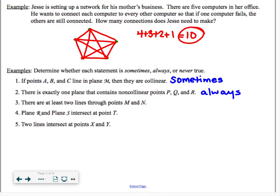Number three, there are at least two lines through any points M and N. This contradicts one of our postulates. This is never true. Remember that between two points there's only one, exactly one line. Plane R and plane S intersect at point T. This one is also never true. Our postulate says that two planes always intersect at a line. Therefore, they will never intersect at just a point. And finally, two lines intersect at points X and Y. This is also never. Two lines intersect at exactly one point.